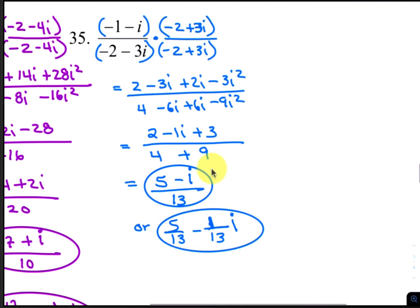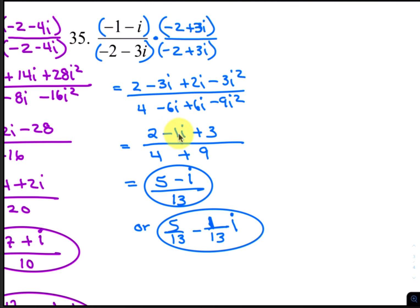For number 35, the conjugate of negative 2 minus 3i is negative 2 plus 3i. Multiply that on the bottom and top. When you distribute everything on the top and bottom and combine like terms: negative 3 times i squared is positive 3, and combining negative 3i and 2i gives negative i. Adding 3 plus 2 makes 5. In the denominator, the negative 6i's cancel, and negative 9i squared becomes positive 9. 9 plus 4 makes 13. Separating into two parts gives the final answer.